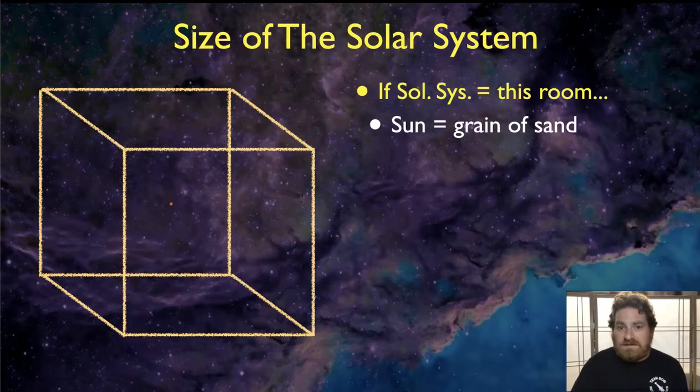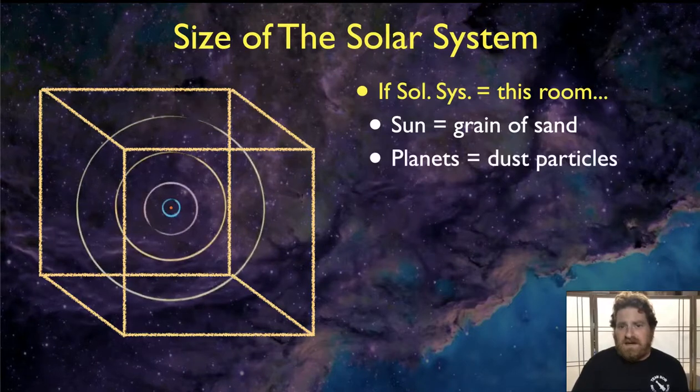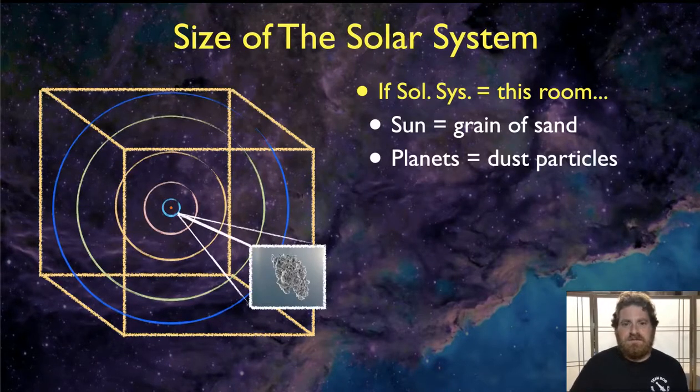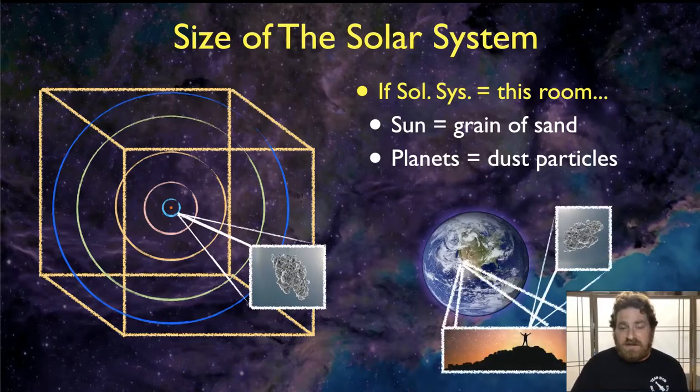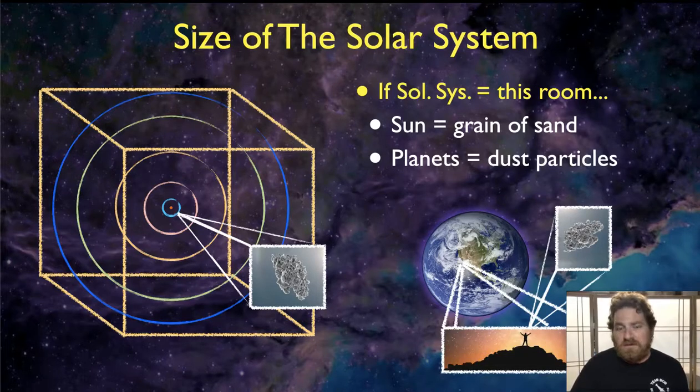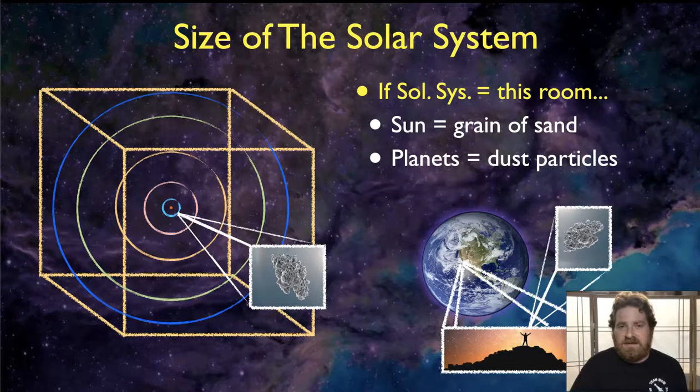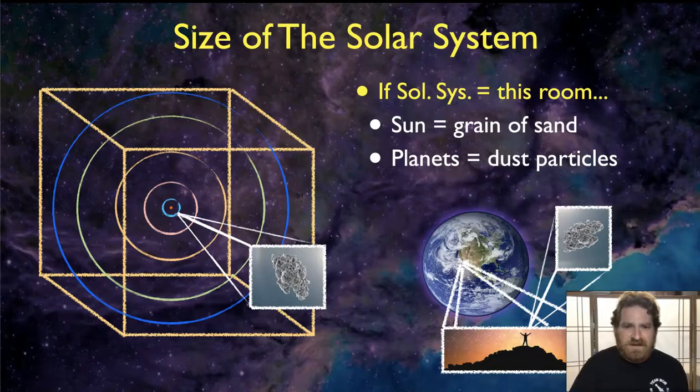And so if you walked into that classroom, all you would see was this bright glowing speck in the middle of the room, and orbiting around it would be particles of dust, each of which represents a planet, one of those particles of dust being Earth. And you wouldn't see those particles of dust because, again, they'd be microscopic. All you'd see is that bright glowing spot in the middle of the room.